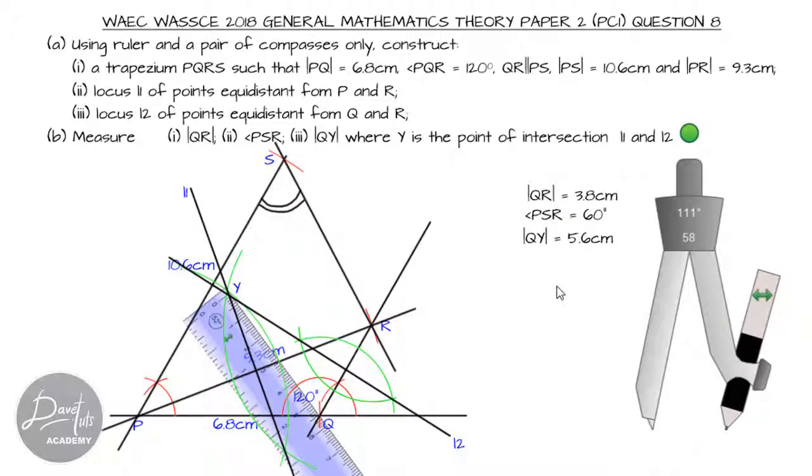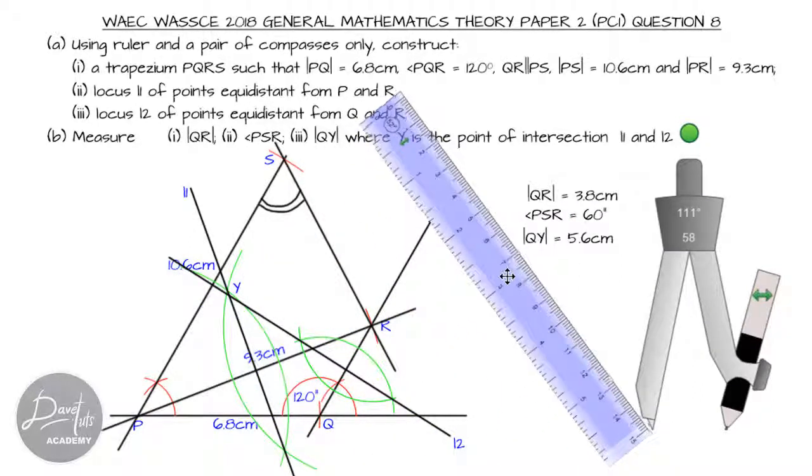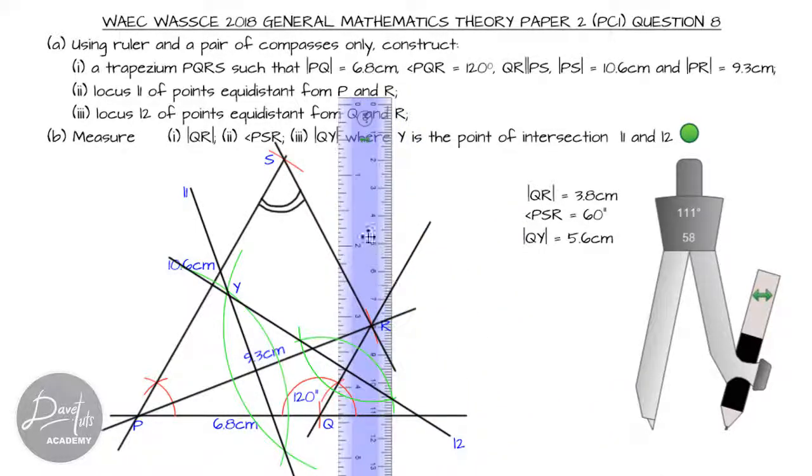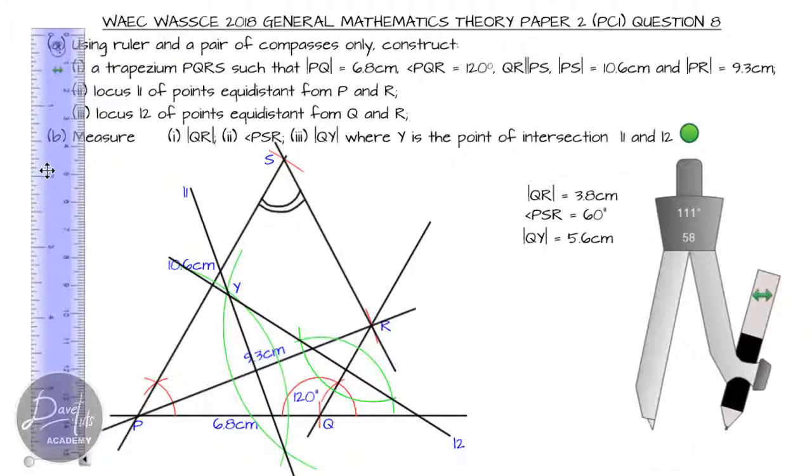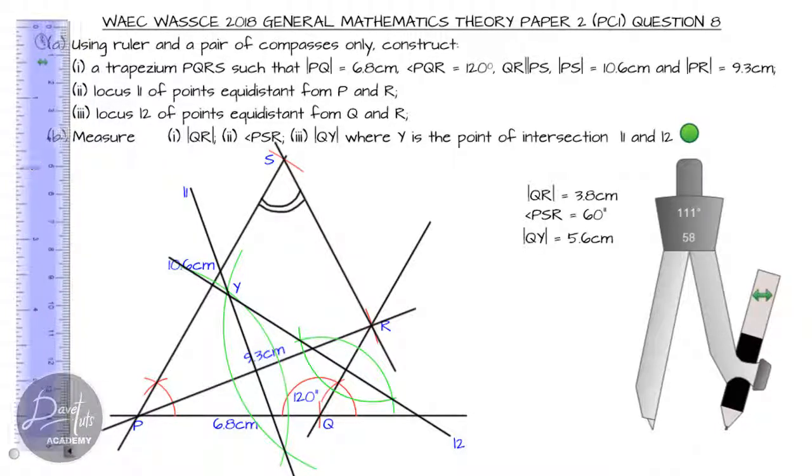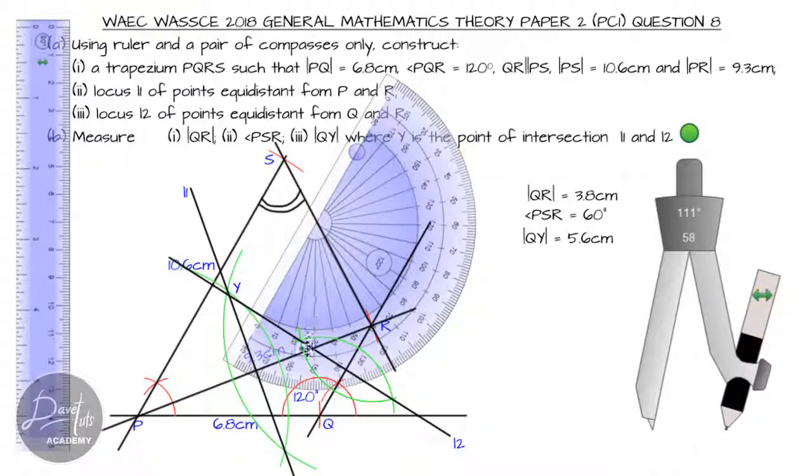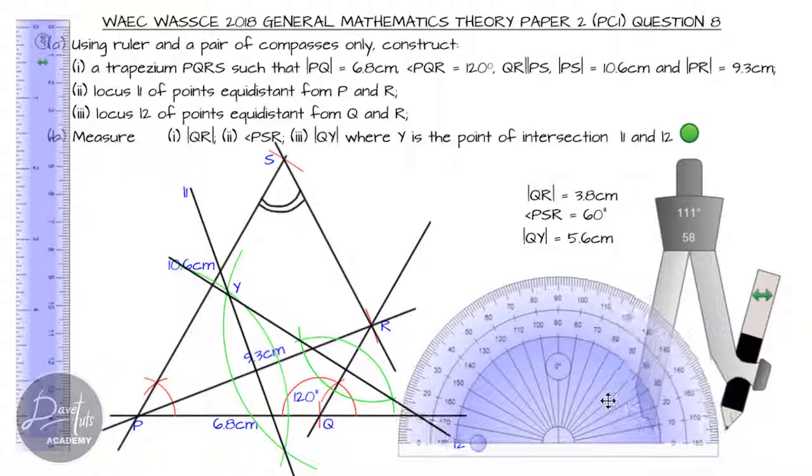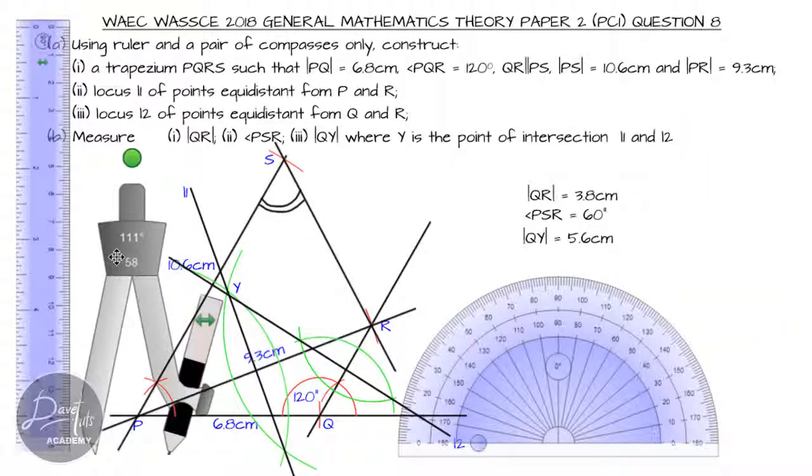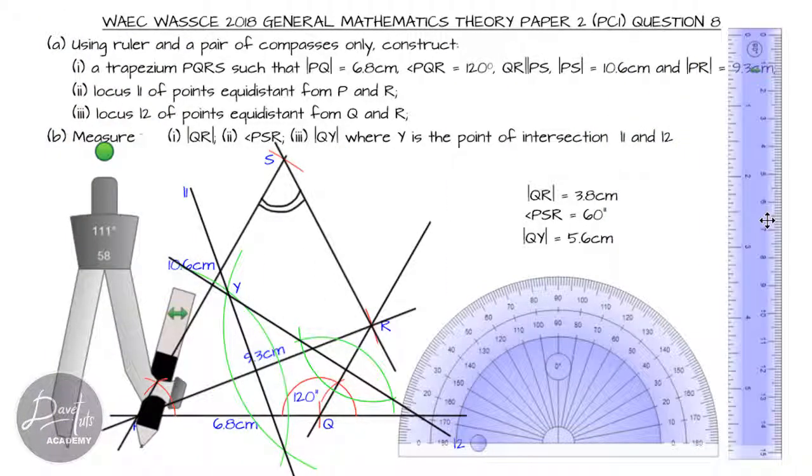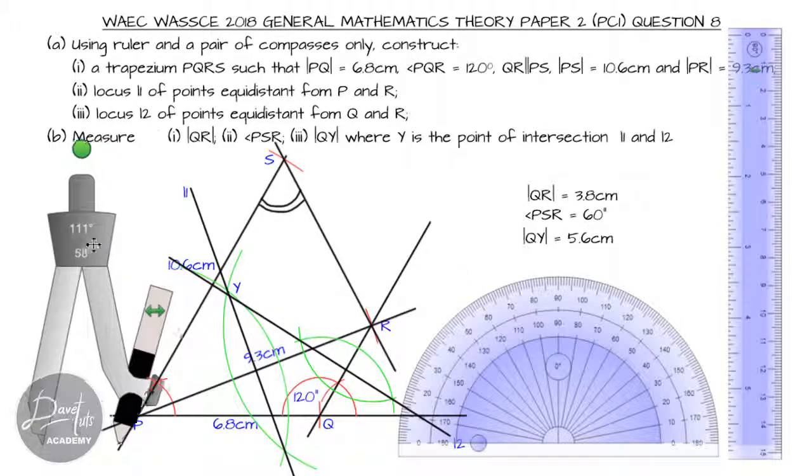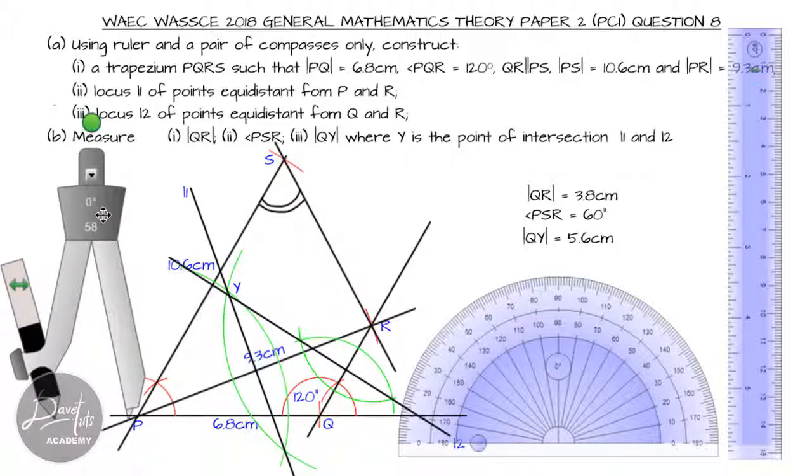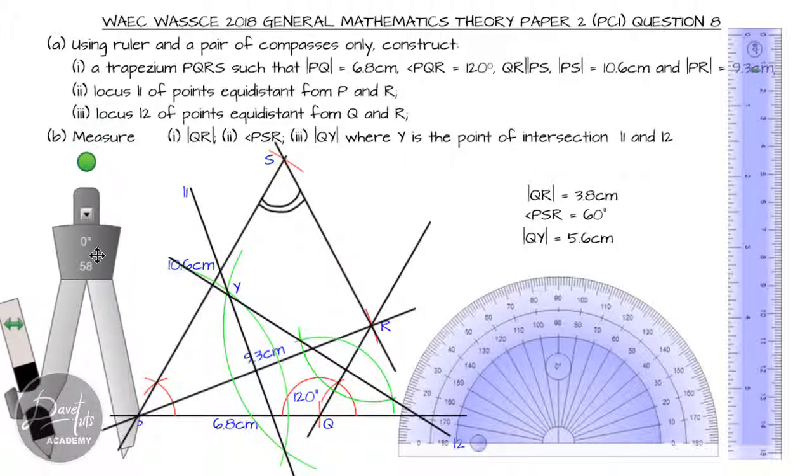With that, our problem on construction in WAEC mathematics general paper January/February 2018 is done and dusted. Our advocacy again is that the more you practice with this, the better you're going to become. We have learned how to locate the locus of points equidistant from two fixed points and are able to measure all that we're asked to do. It's DevTut Academy. Don't forget to subscribe, and until next time, God bless you.